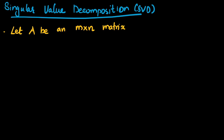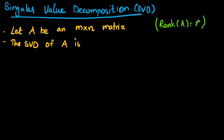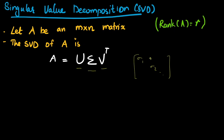For the singular value decomposition, let A be an m by n matrix with rank equal to r. The singular value decomposition of A is: A = U Σ V^T. This is the form of SVD, where U and V are orthogonal matrices made up of eigenvectors, and Σ is the diagonal matrix made up of the singular values σ₁, σ₂, etc., with all other elements equal to zero.